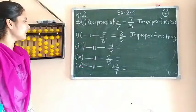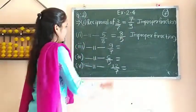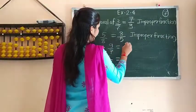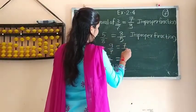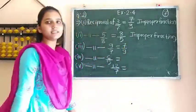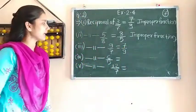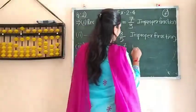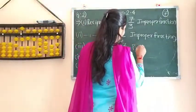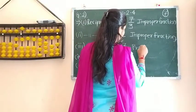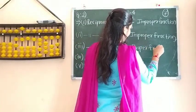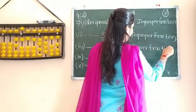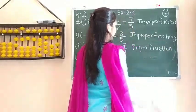Similarly, for 9 by 7, its reciprocal is 7 by 9. The numerator is smaller than its denominator, so it is a proper fraction.